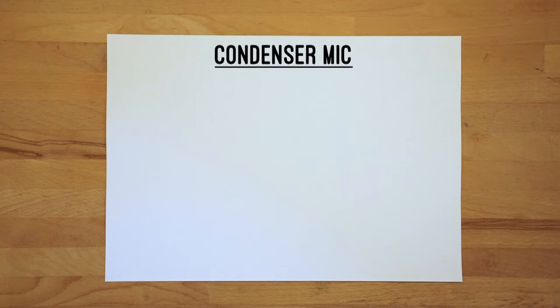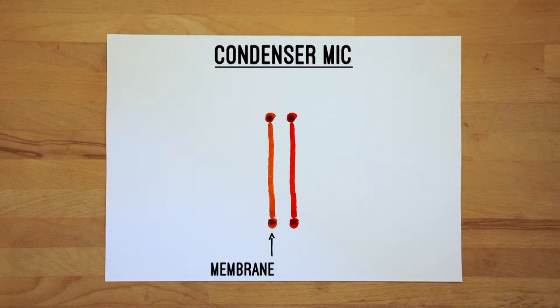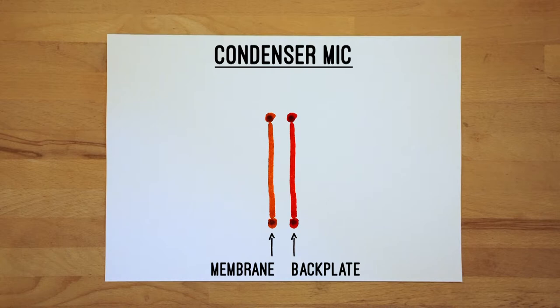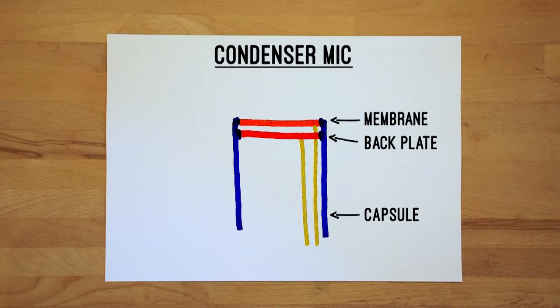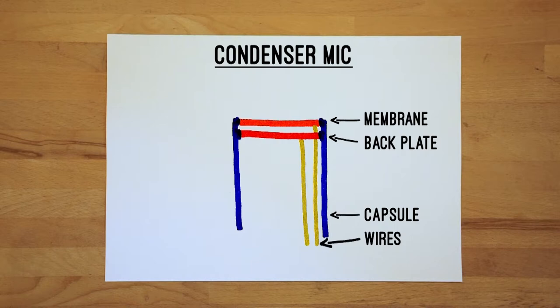The basis of a condenser mic consists of two electrically charged plates: the membrane, or diaphragm, which can move back and forth, and a backplate, which is static. These two plates are placed in a capsule, or housing, of the microphone. Because the plates need to be electrically charged to work, this type of microphone needs phantom power, which means it is an active type of microphone. The two plates form a capacitor, which can store a small amount of electric energy, dependent on its size and the proximity of the plates.